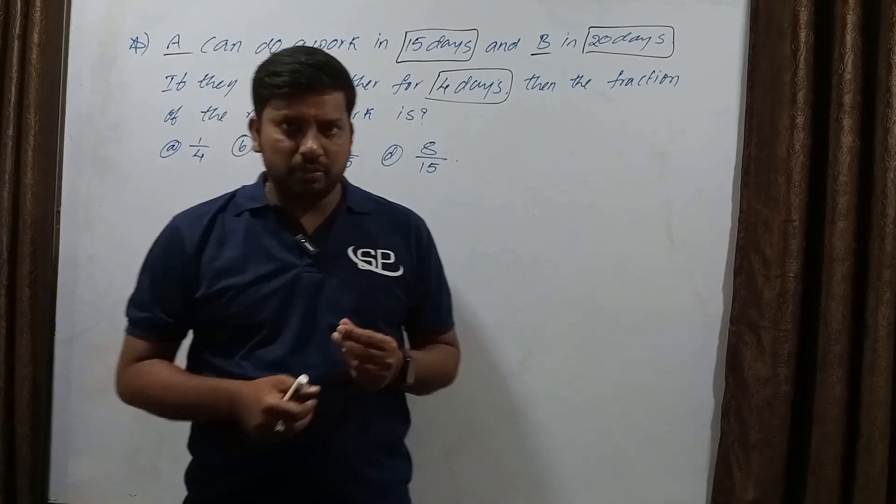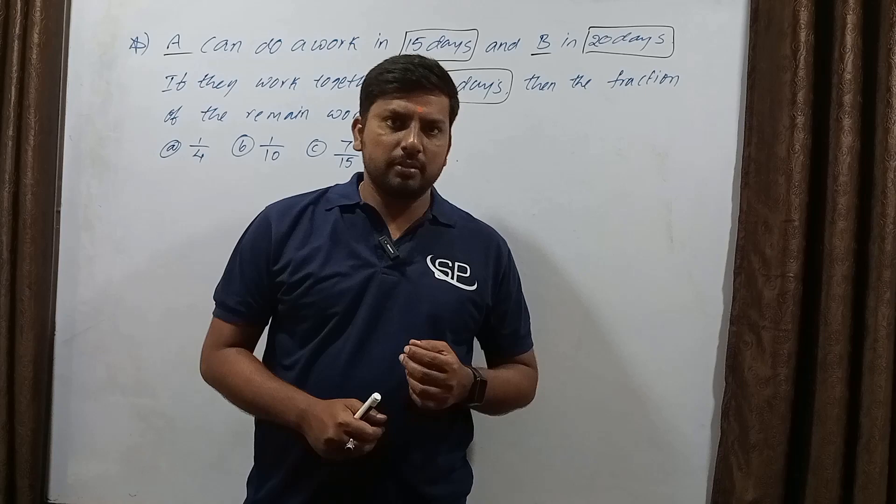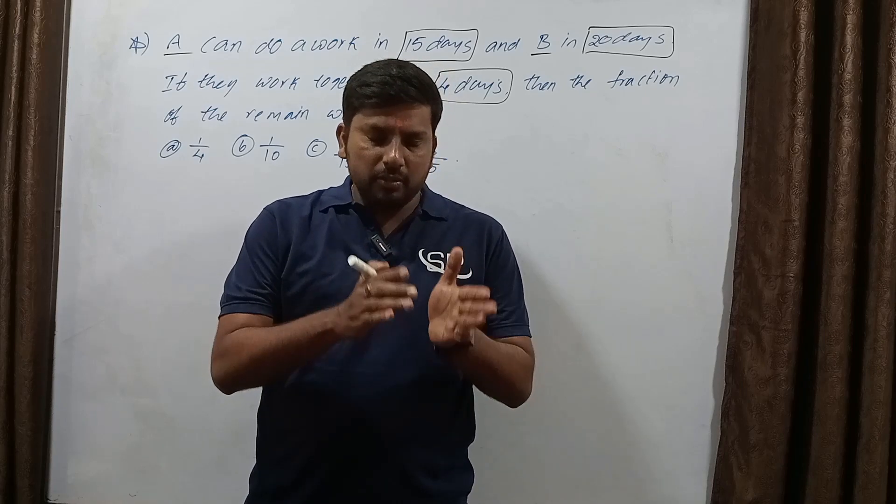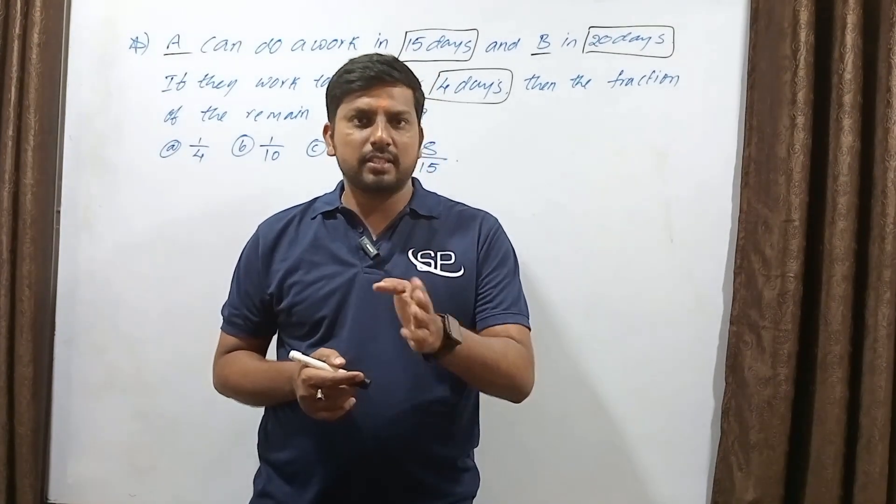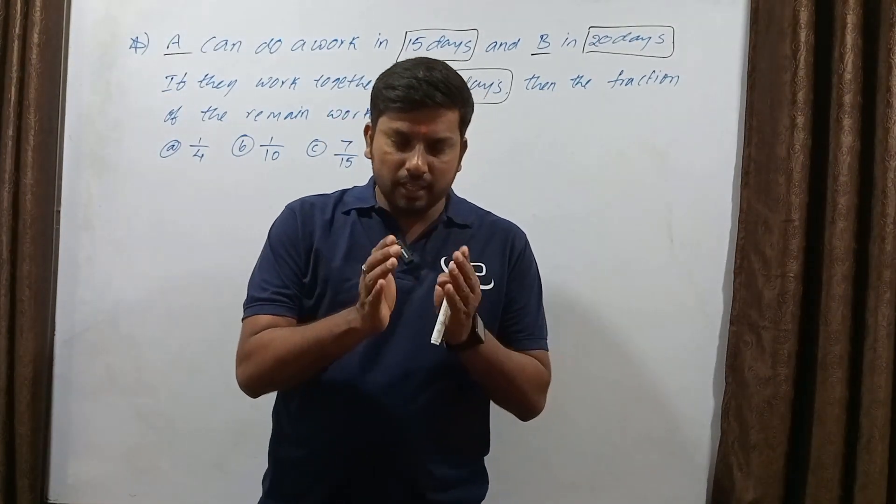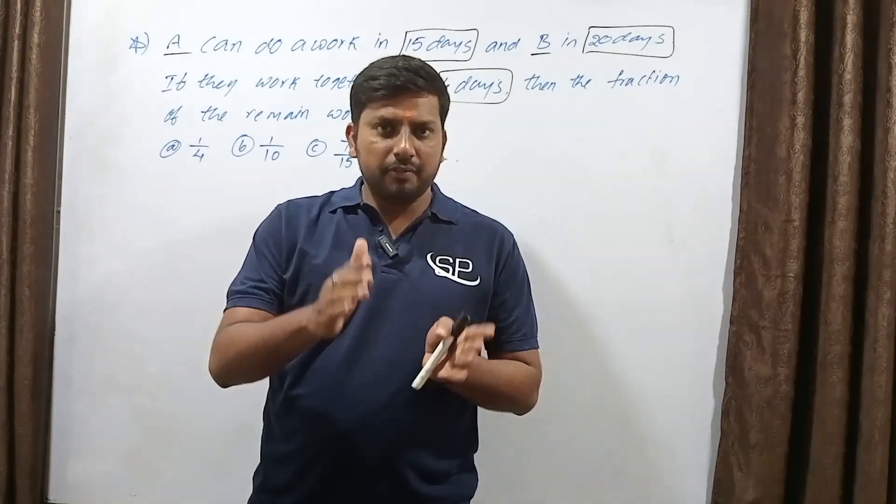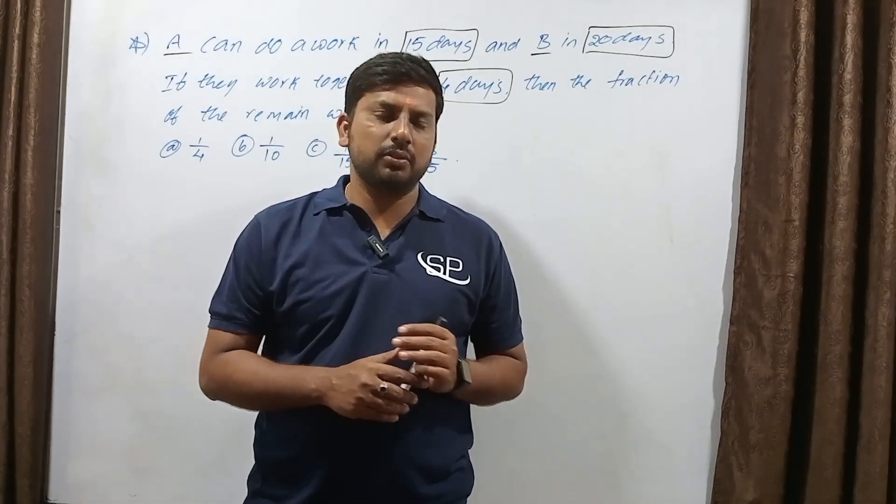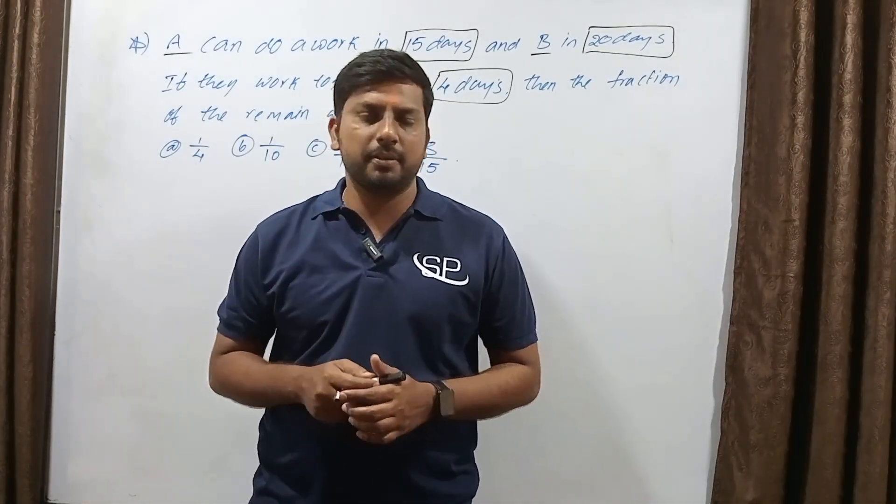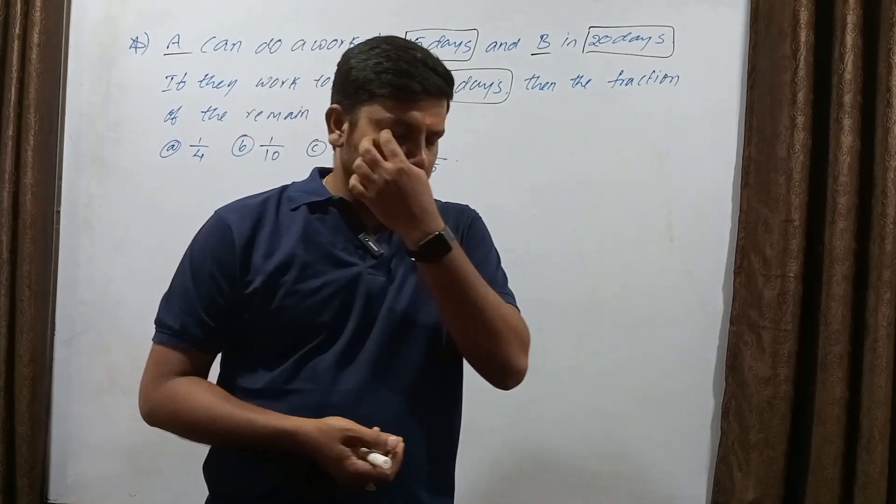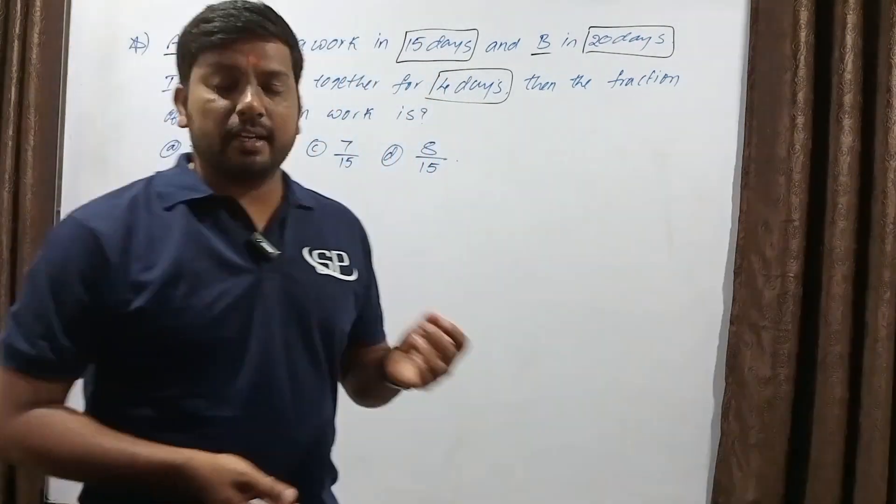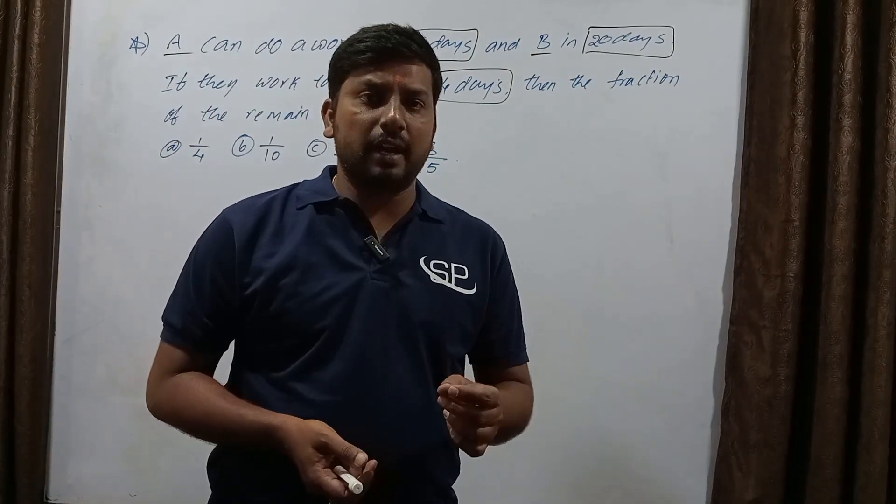A can do the whole work, and B can do the whole work. But both of them start work together. After 4 days, we need to find the remaining work as a fraction. This is the most important model when you're comparing time and work - the answer is taken as a fraction.